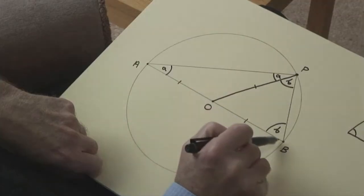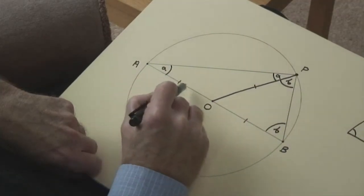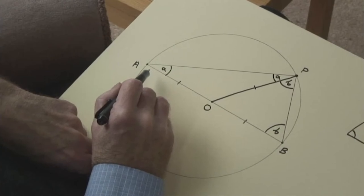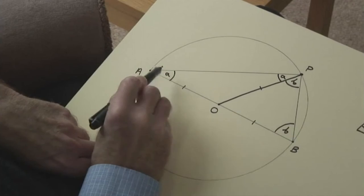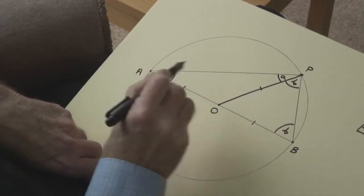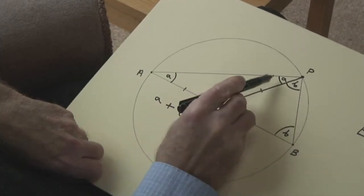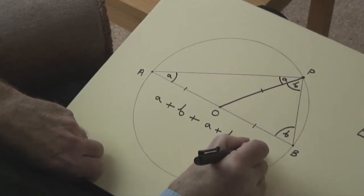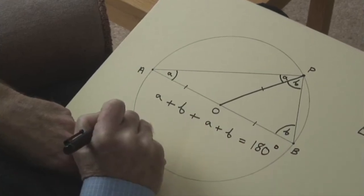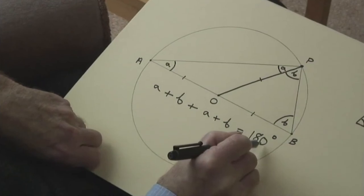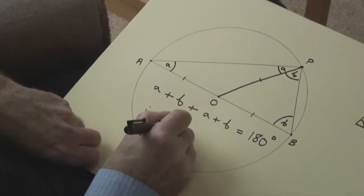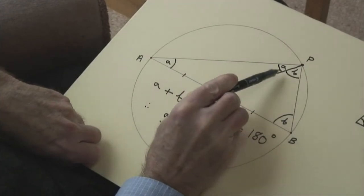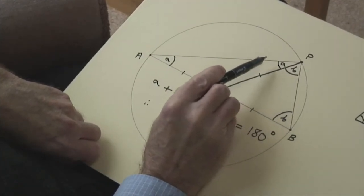The final part of the proof involves taking the whole triangle A, B, P and using the fact that the angles of any triangle add up to 180 degrees. This angle here is A, that angle is B, and the third angle of the big triangle is A plus B. So the sum of those three angles must be 180 — meaning two lots of A plus B equals 180, and therefore A plus B equals 90 degrees. And that's what I was trying to prove: that angle there is always 90 degrees, no matter where P is on the circumference.